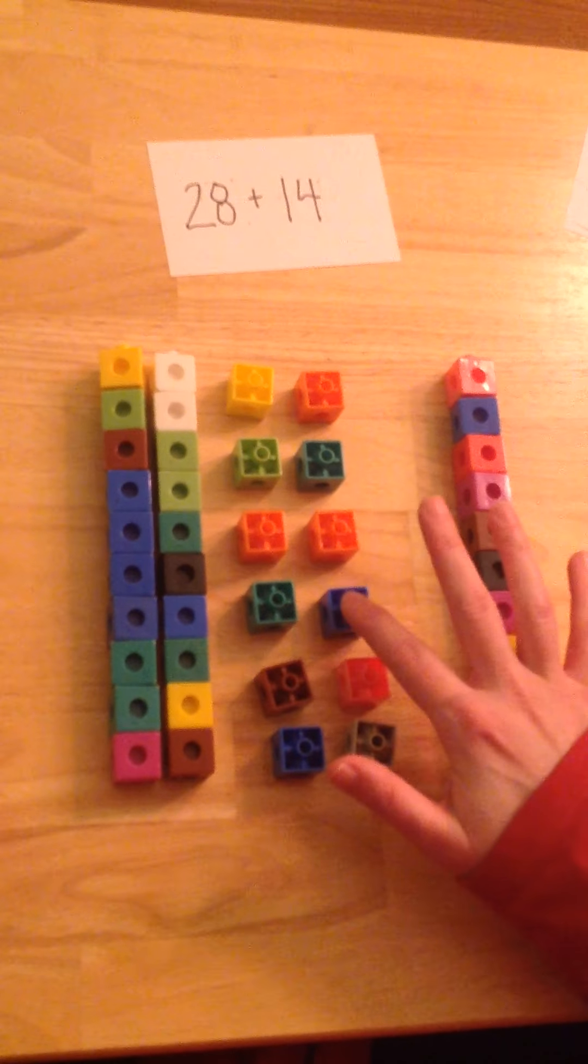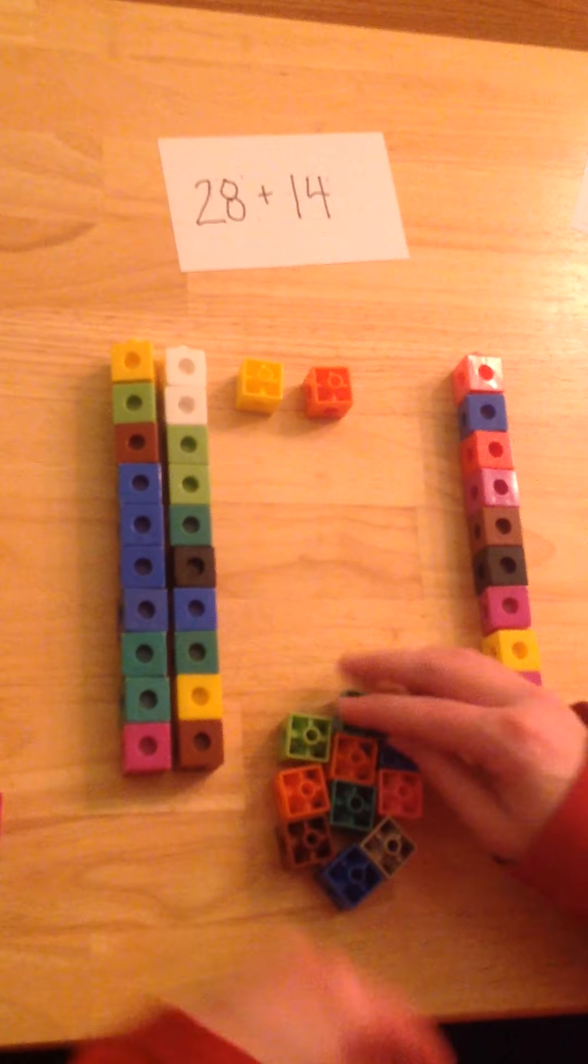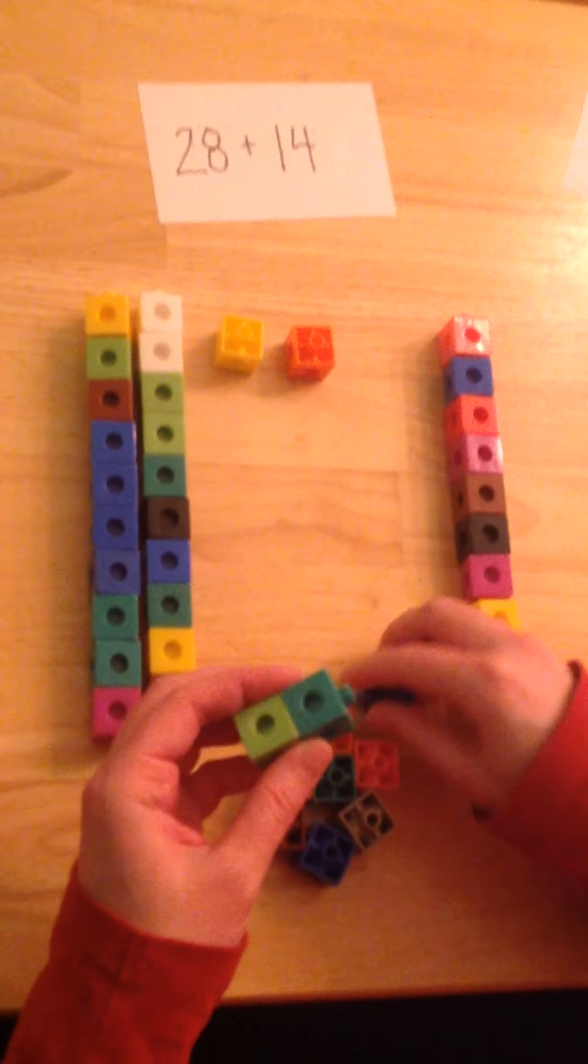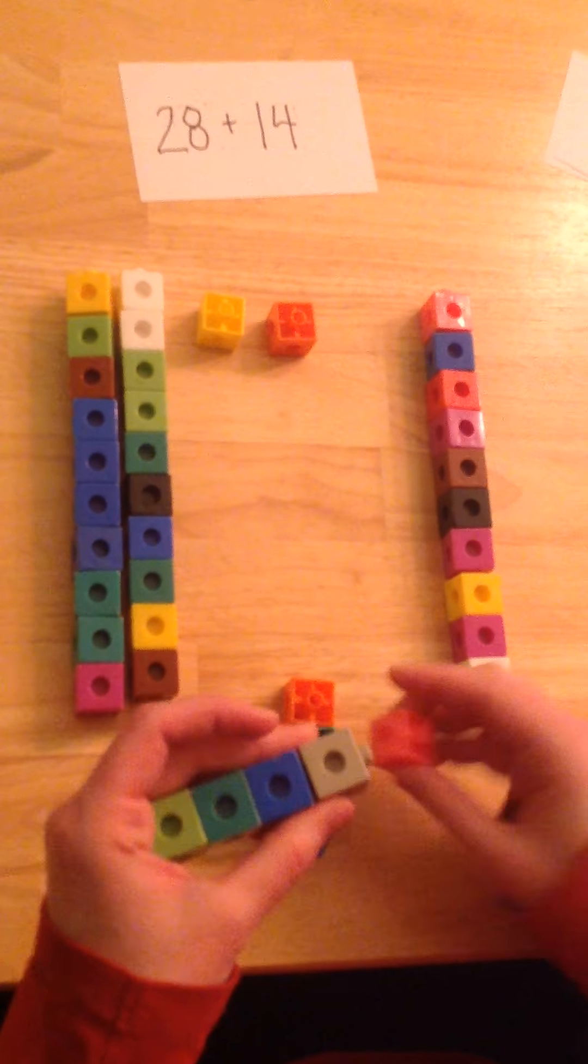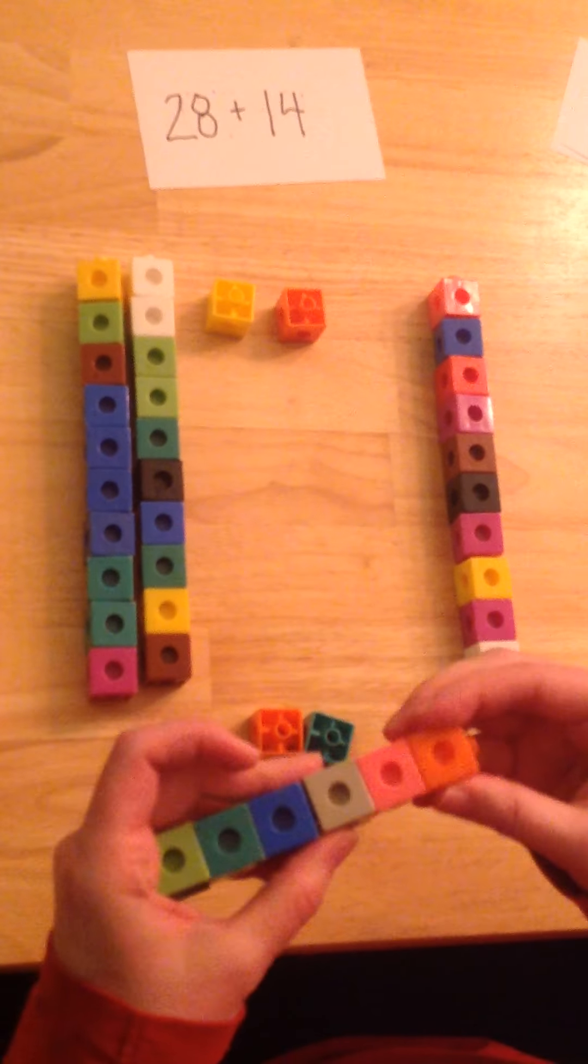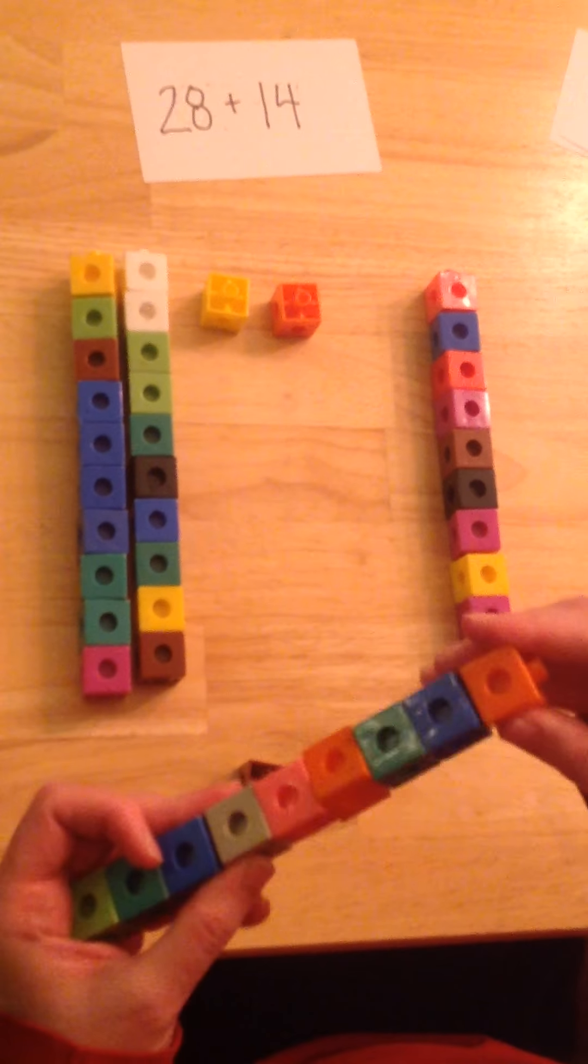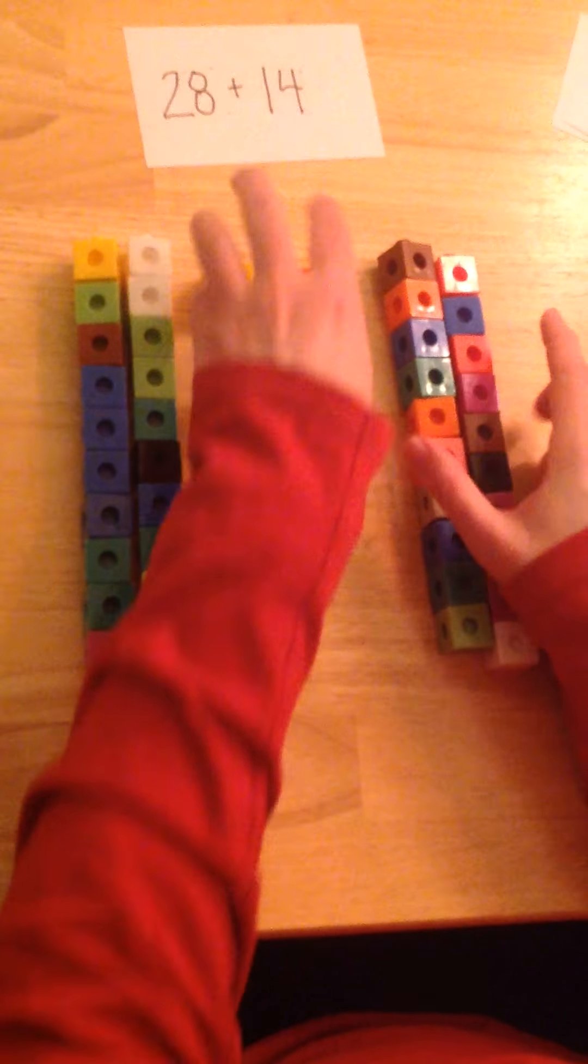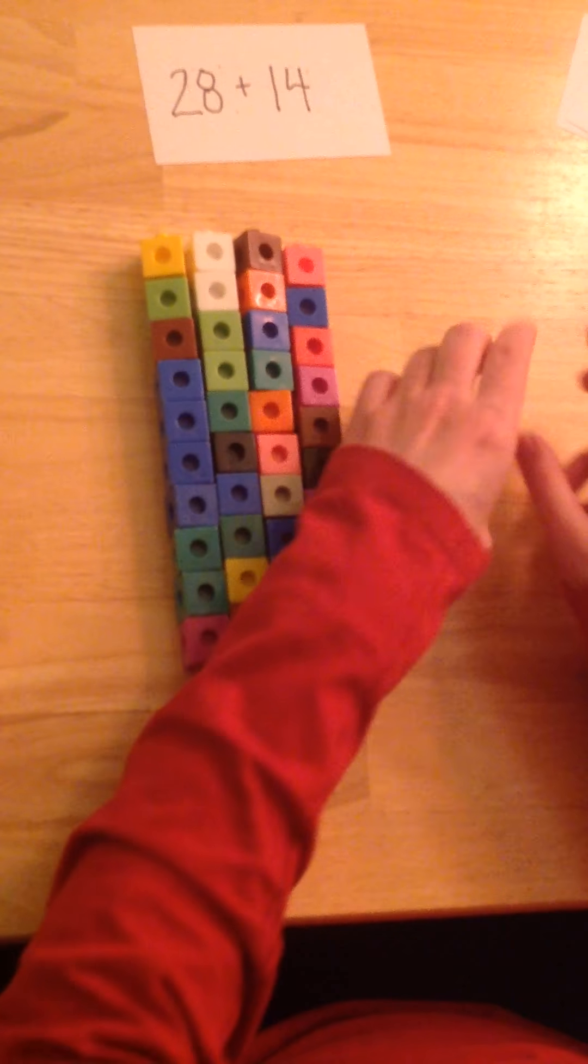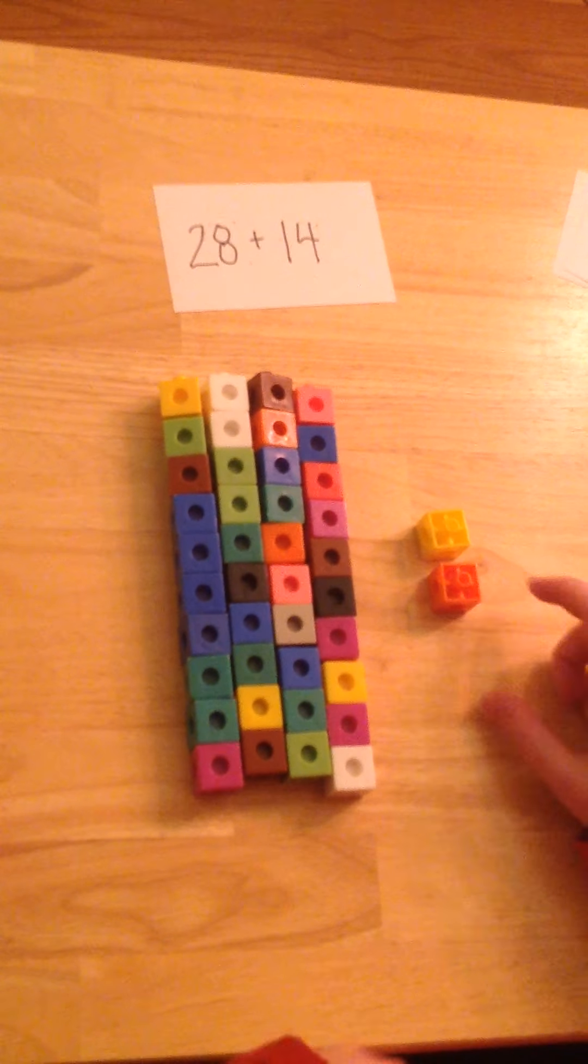1, 2, 3, 4, 5, 6, 7, 8, 9, 10. I'm going to use these 1s to make a new 10. And then these are going to be my extra 1s that are left over. So 28 plus 14 equals 10, 20, 30, 40, 41, 42.